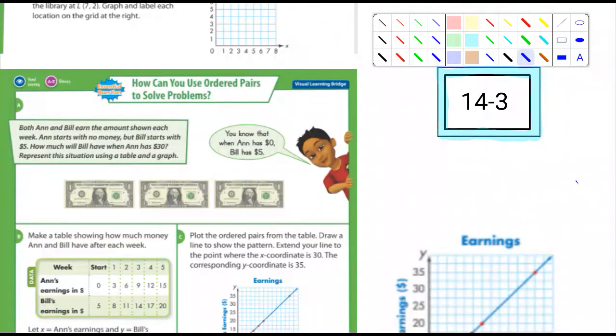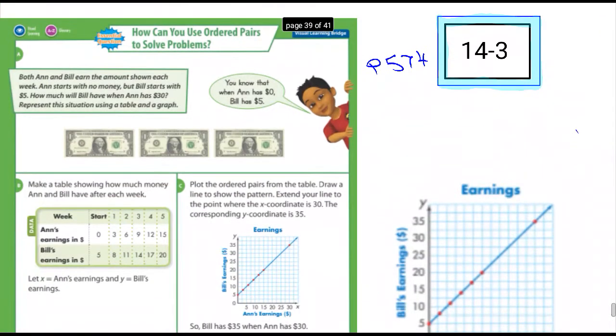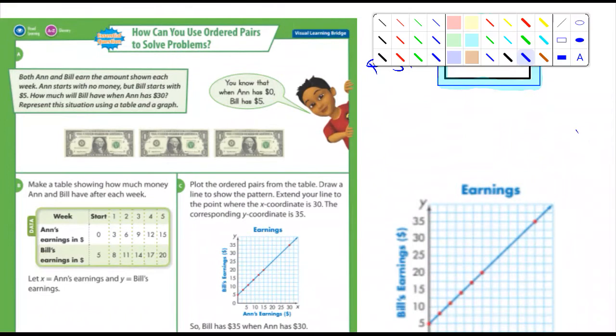Okay, and what page is this? 5.74. 5.74, 5.75, okay. So it says Using Ordered Pairs to Solve Problems, Chapter 14, Section 3.